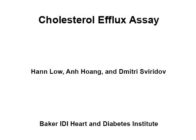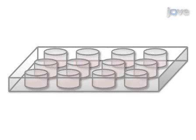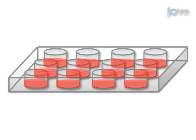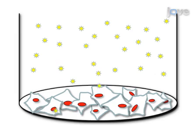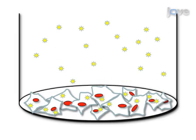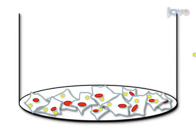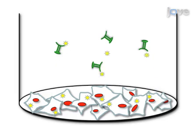The overall goal of this procedure is to measure the ability of cells to release cholesterol and the capacity of an acceptor to take up cholesterol. First, seed an even monolayer culture in 12-well plates, then label cellular cholesterol by incubating cells with tritiated cholesterol for 48 hours. Perform an equilibrium incubation for 18 hours in serum-free media with experimental drug treatments like LXR agonist or cyclic AMP. After washing the cells, proceed to the cholesterol efflux incubation with an acceptor such as plasma HDL or ApoA1.